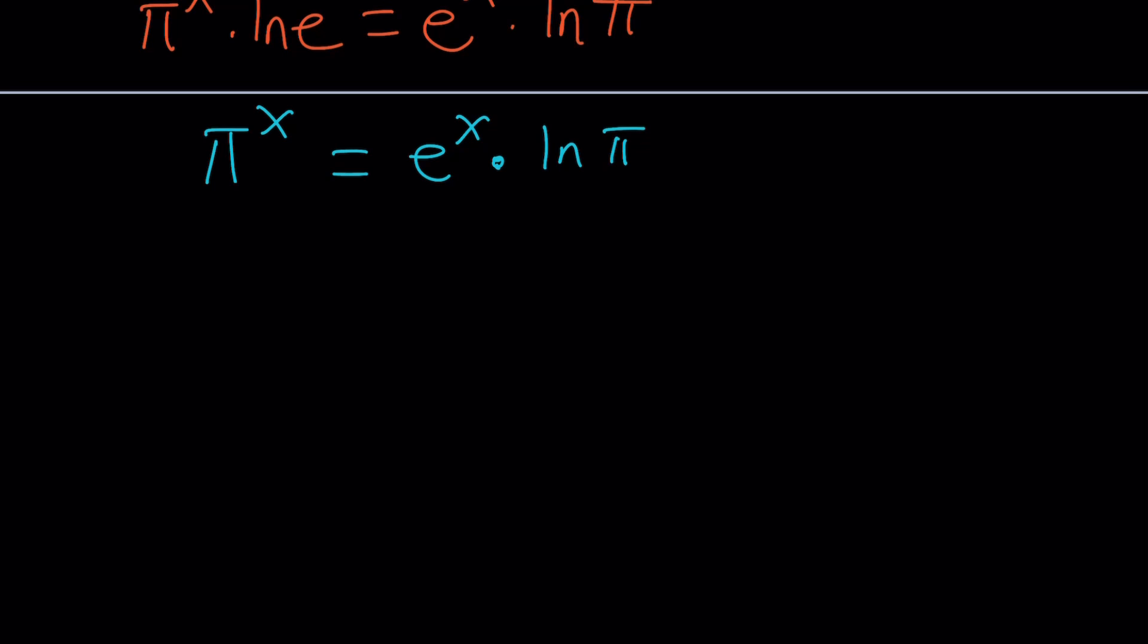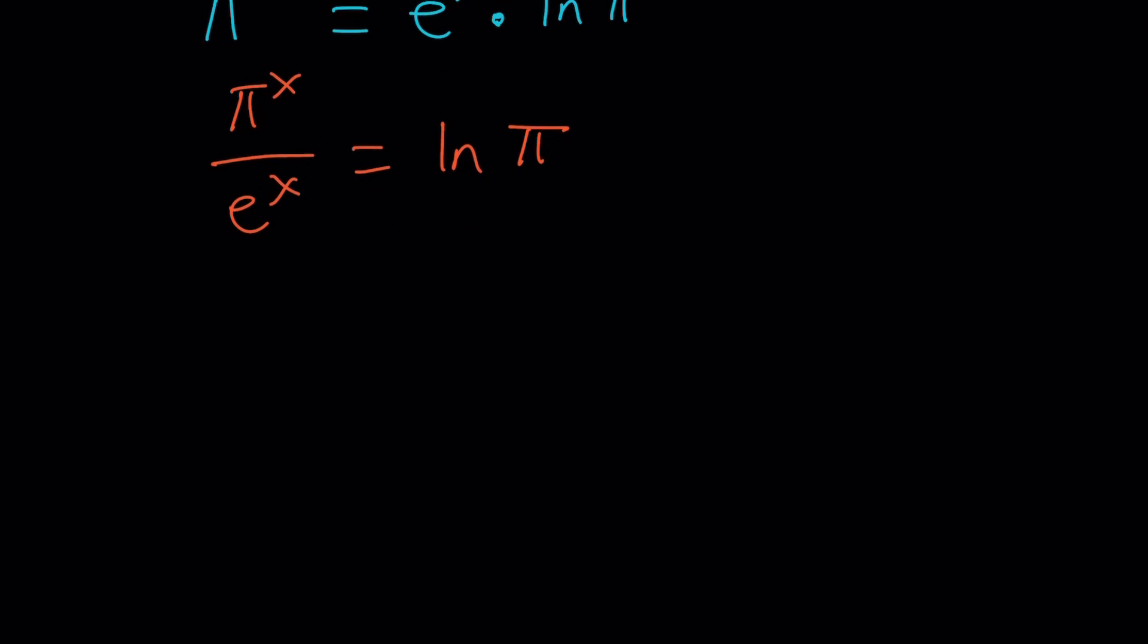At this point, it makes sense if we divide both sides by e to the power of x, because those are exponential expressions. We can divide both sides by e to the x. And that gives us ln pi. And now, we can use x as a common exponent. I'll kind of take it out, and we get the following.